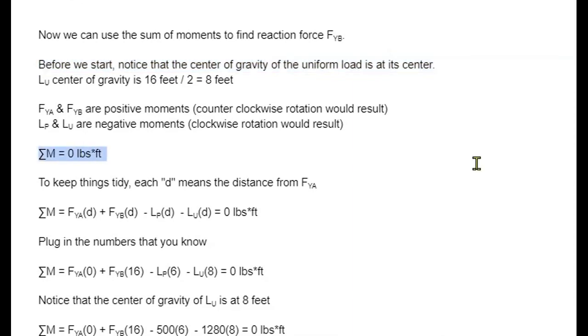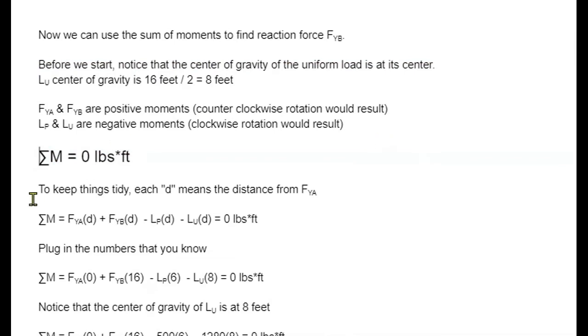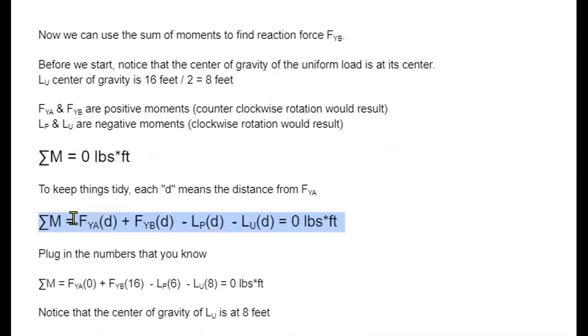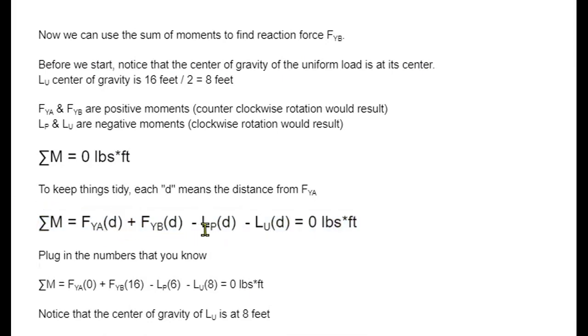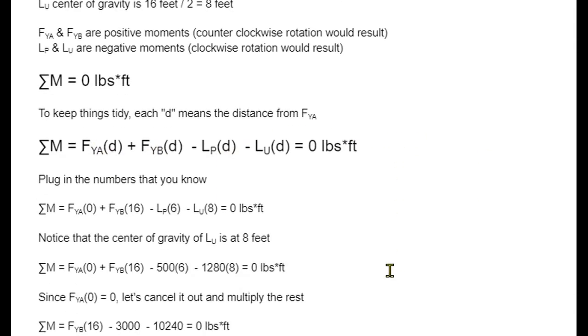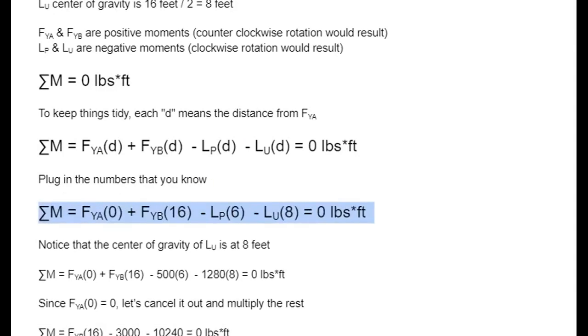All right. So now we can talk about the sum of the moments equals zero foot-pounds. I'm just going to use D for all the distances. You're just thinking about what the distance is from FYA, that point A at the left, to that center point of that next force. If we look at this formula, FYA is the origin, so it's zero. FYB is at the end of the beam, so it's 16. The point load is six feet from point A. And the center of gravity of the uniform load is eight feet from point A. We just replace these distances with the distances they are in your diagram.